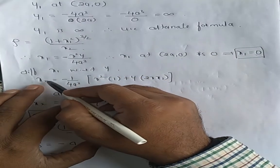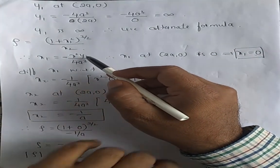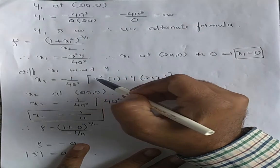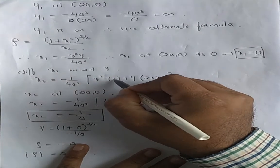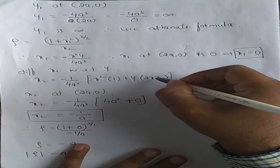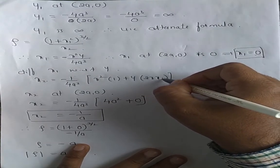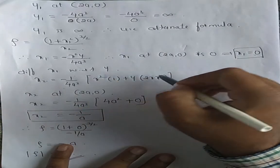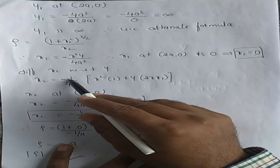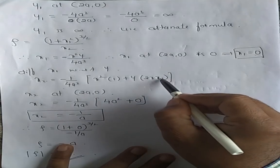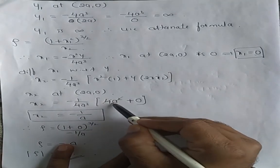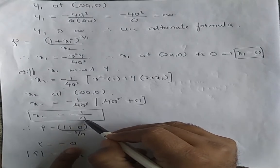To find x₂, differentiate x₁ = y·x² / (−4a³) with respect to y using the product rule. This gives x₂ = −(1/4a³)·[x² · 1 + y · 2x · x₁]. Substituting (2a, 0) with x₁ = 0: x₂ = −(1/4a³)·4a² = −1/a.